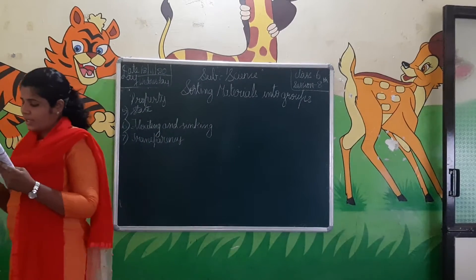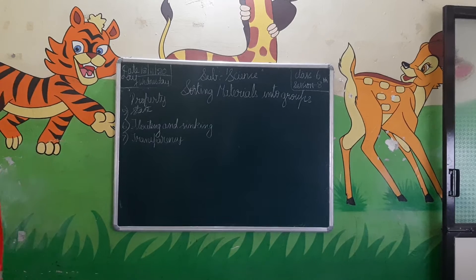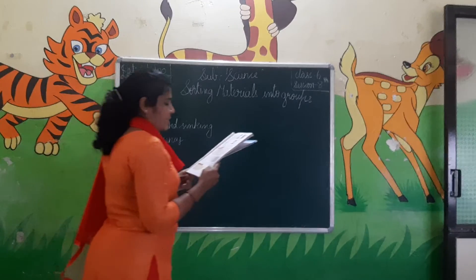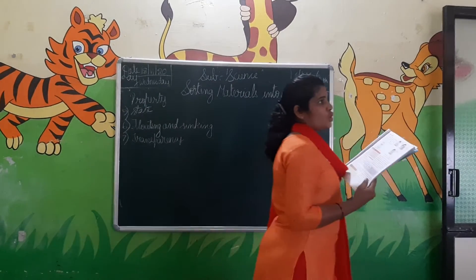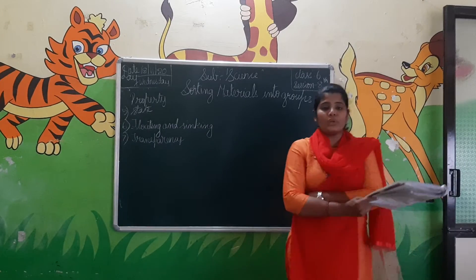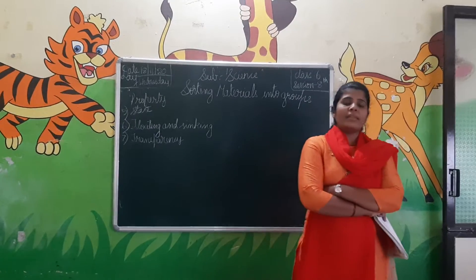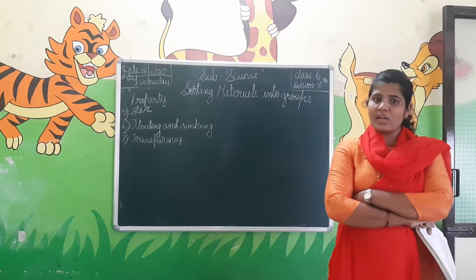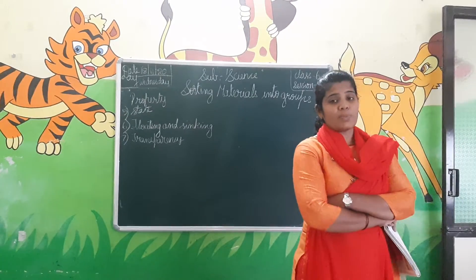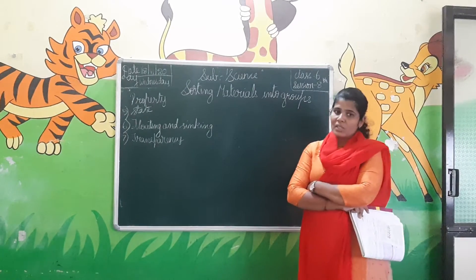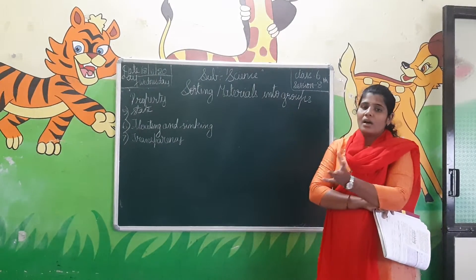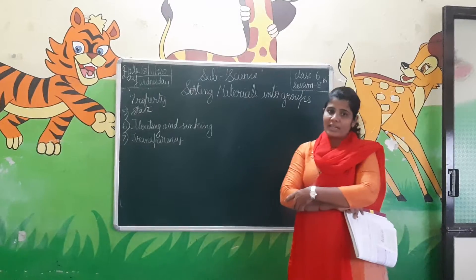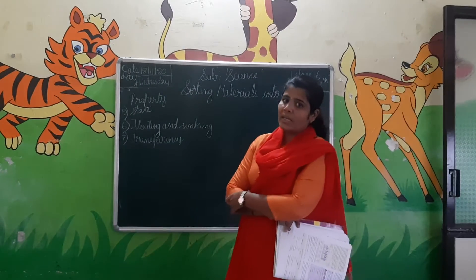Shopkeepers usually prefer to keep biscuits, sweets, and other eatables in transparent glass jars and transparent plastic containers so that buyers can easily see these items. When you go to shops you can see that they keep everything in transparent glass cupboards or transparent glass jars and plastic jars.